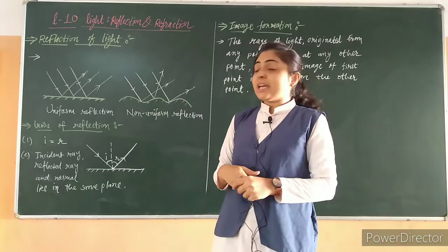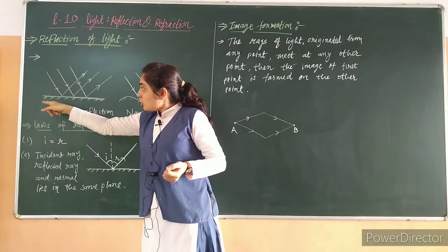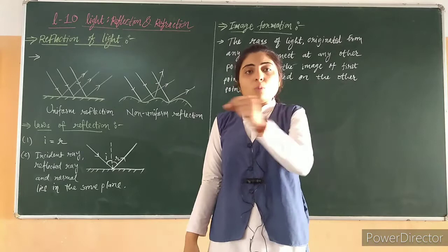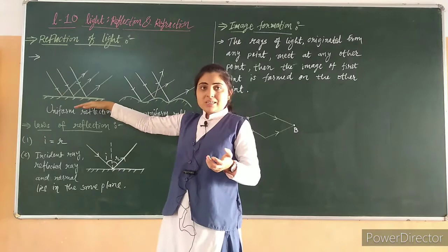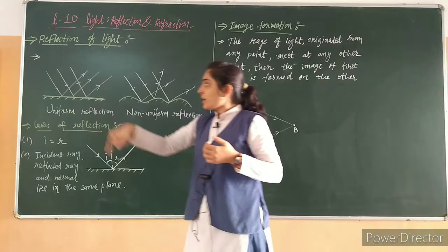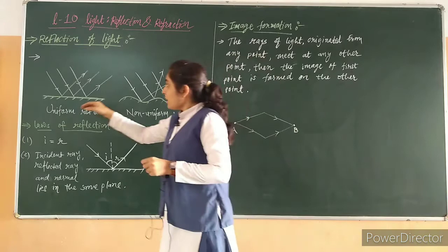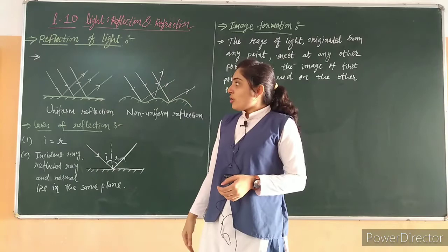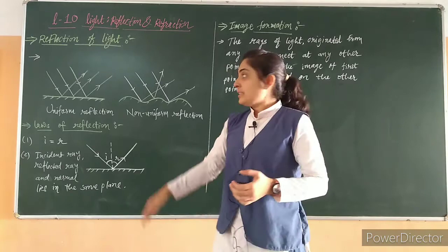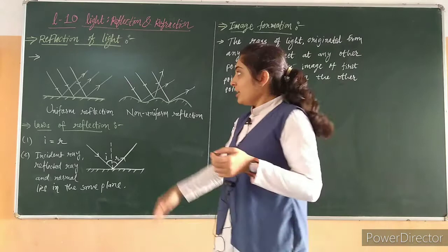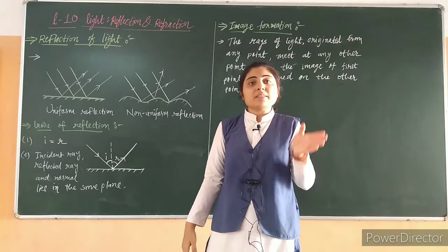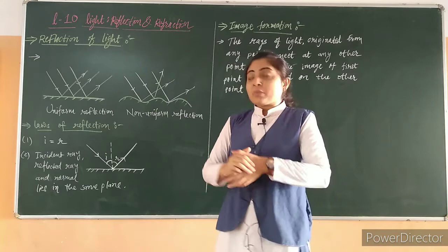When a parallel beam of light is incident on a very shiny and completely flat surface — any mirror surface or glass surface will be shiny and flat — at the back side of the glass surface, an opaque coating is done. Because if it is transparent glass, the light will pass through it. But it is made opaque by coating at the back side. When a parallel beam of light is incident on a flat surface, the reflected rays will also be parallel. When parallel rays incident and reflect in a parallel manner, this kind of reflection is called uniform reflection.